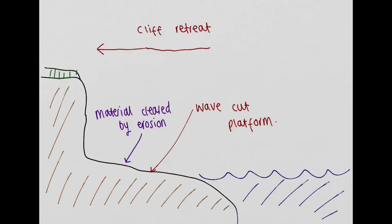So the cliff continues to retreat up until the point the cliff has fully retreated, up until the cliff has retreated back by, can be hundreds of metres along the way. And if we come down onto our diagram down here, we've got our material which is cleared by erosion, as a result of the erosional process by the sea. And we're left with what's termed as a wave cut platform.